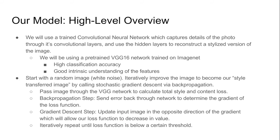We will now talk about our model. We will use a trained convolutional neural network which captures the details of the photo through its convolutional layers and use the hidden layers to reconstruct a stylized version of the image. We will be using a pre-trained VGG16 network trained on ImageNet. It has high classification accuracy and a good intrinsic understanding of the features. Our process begins by starting with a random image, otherwise also known as white noise.